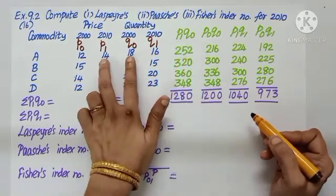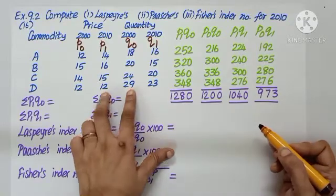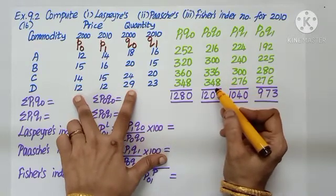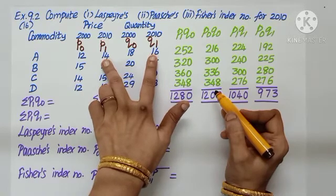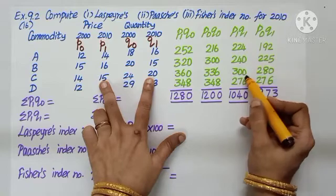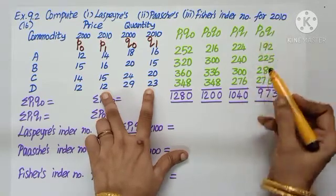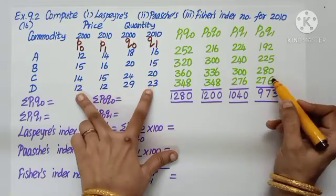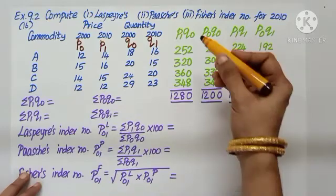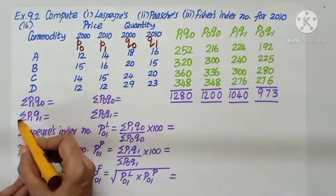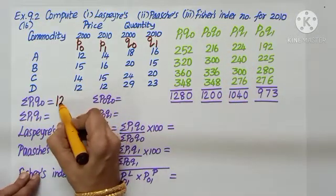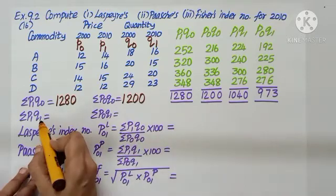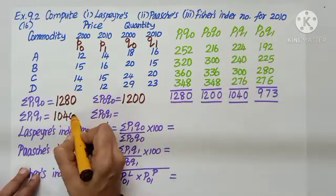P1Q0 multiplying, which we have written here. P0Q0: 12 into 18, 15 into 20, 14 into 24, 12 into 29. P1Q1, multiply these two columns: 14 and 16, 16 and 15, 15 and 20, 12 and 23. P0Q1, multiply these two: 12 into 16, 15 into 15, 14 into 20, 12 into 23. As we get the total, let us remember to put sigma. Sigma P1Q0 is 1280, sigma P0Q0 is 1200, sigma P1Q1 is 1014, sigma P0Q1 is 973.